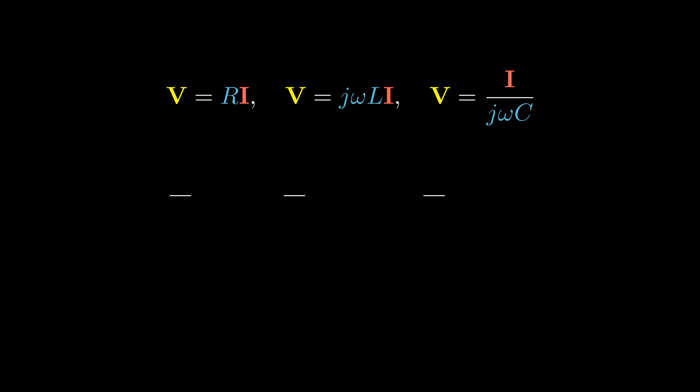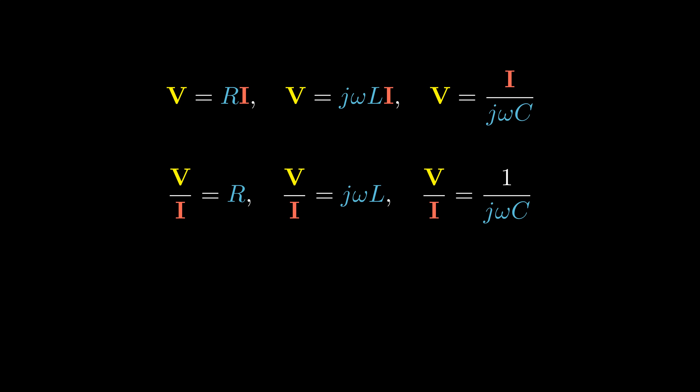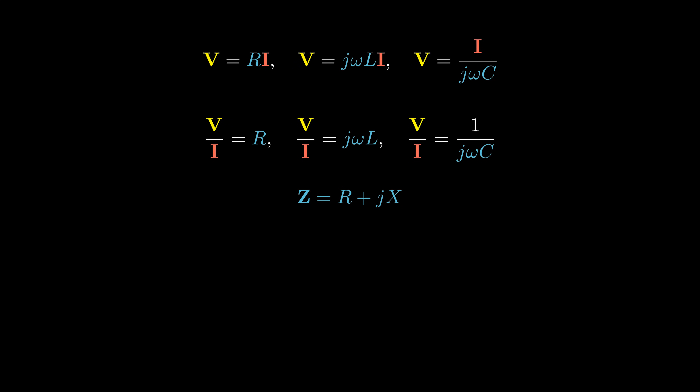Impedance is the ratio of phasor voltage over phasor current — a frequency-dependent quantity measured in ohms. It represents the opposition that the circuit exhibits to the flow of sinusoidal current. Impedance is a complex quantity with real and imaginary parts: resistance and reactance. If the reactance is positive, the impedance is inductive; if it is negative, the impedance is capacitive. The reciprocal of impedance is called admittance, measured in Siemens. The real part of admittance is the conductance, while the imaginary part is called susceptance.